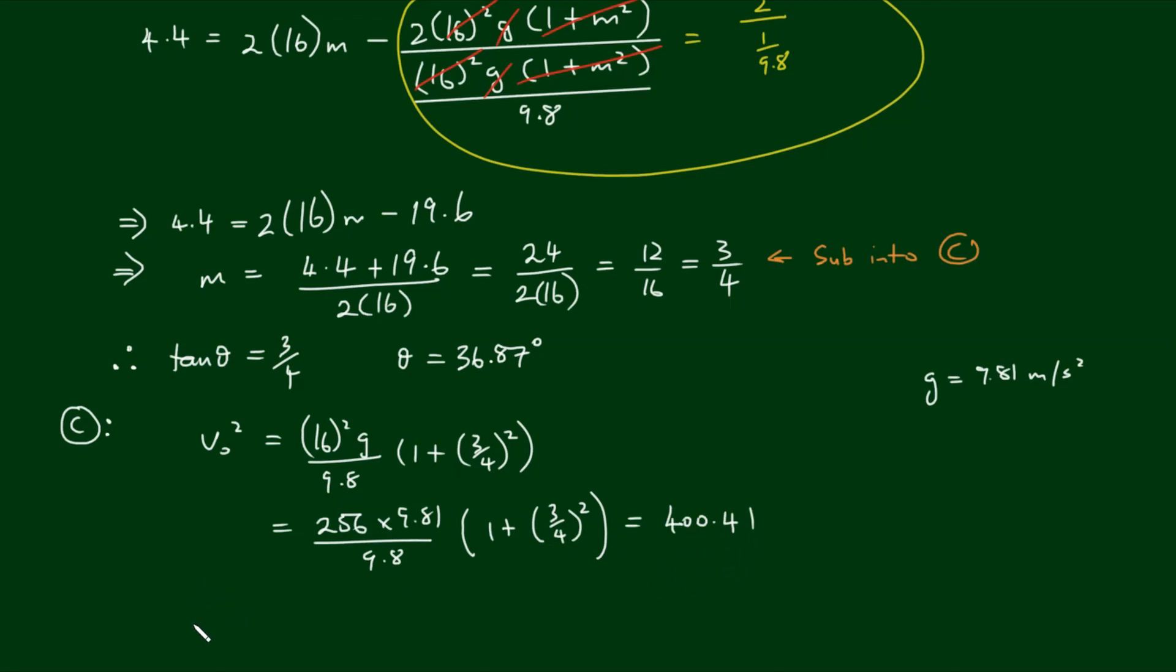Now remember this is v0 squared, so the initial velocity equals the square root of 400.41. Note there are two possible answers but I'm only taking the positive answer, so we get about 20 meters per second. Let's box our answers.